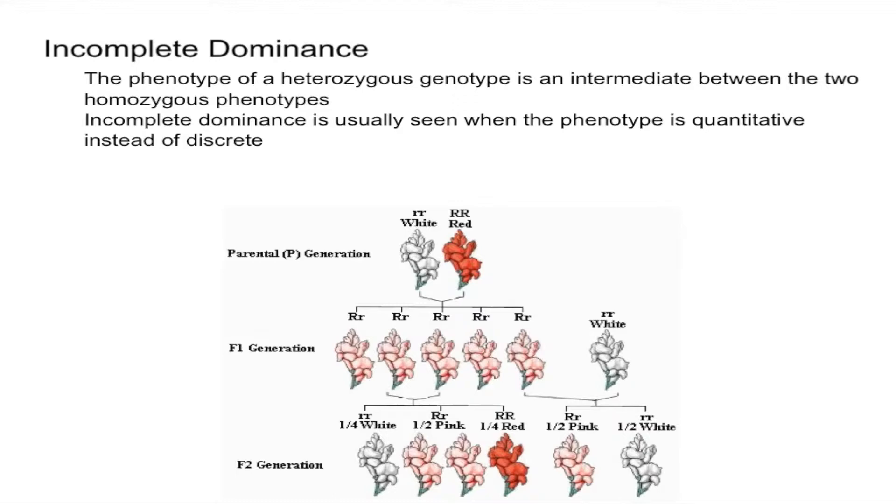So instead of having two phenotypes, for example wrinkled or round peas, you get three phenotypes. And the third phenotype is going to be a combination of the dominant and recessive phenotypes.